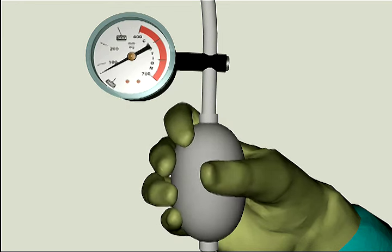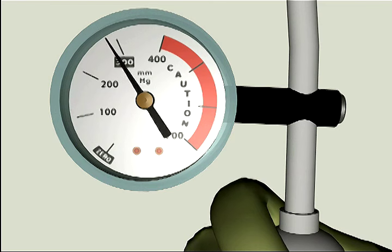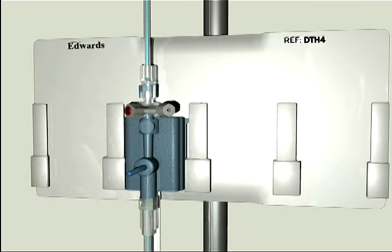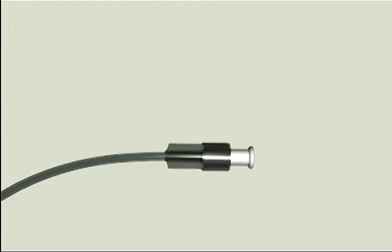Step 5: fast flush the TruWave transducer system. Pressurize the IV flush solution bag to 300 millimeters of mercury. Pull the snap tab to flush the system under pressure while tapping on the tubing and stopcocks to remove any residual bubbles.